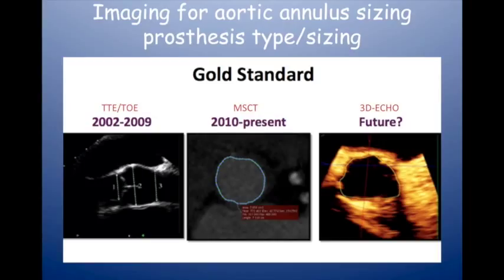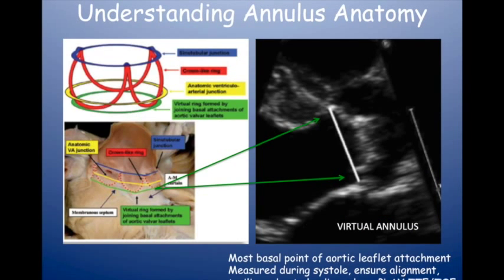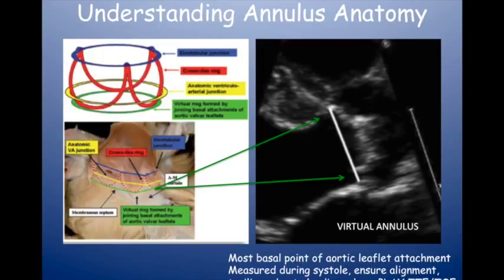Why is CT better? The aortic annulus is a complex structure consisting essentially of four rings: the sinotubular junction, the leaflet attachments, the virtual annulus at the basal attachment, and the true anatomical distinction between aorta and ventricle. The annulus you're measuring on echo is not an anatomical structure — it's a virtual one. On the parasternal long axis view, you measure from trailing edge to leading edge mid-systole when the diameter is greatest, because the annulus area is bigger during systole than diastole.